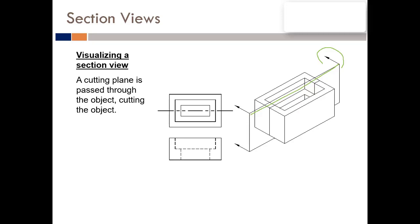It is called the cutting plane line because it cuts the part at a specific point. For example, for this part I choose to cut from the center. This is the original location of the part, and the cutting plane line is represented by this specific line shape, which I will explain in the coming slides.